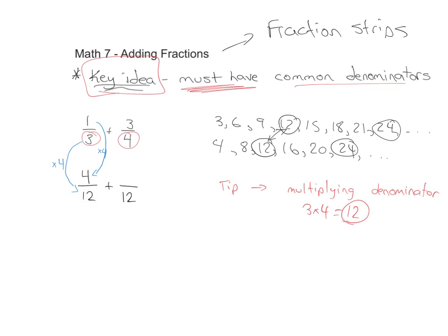Same thing over on the other side. We're going to ask ourselves, what times 4 gives me 12? And you can see that's just going to be 3. So therefore, to keep this equivalent, I need to do the same thing to the numerator. I'm going to multiply it by 3. So 3 times 3 is 9.